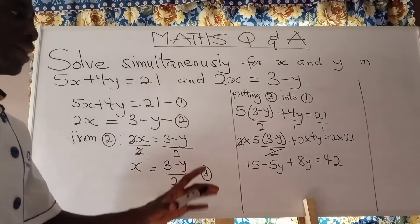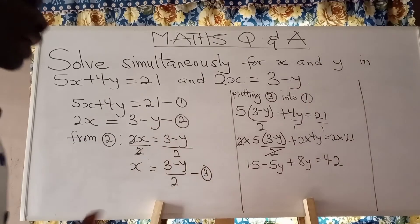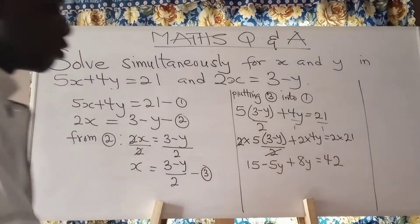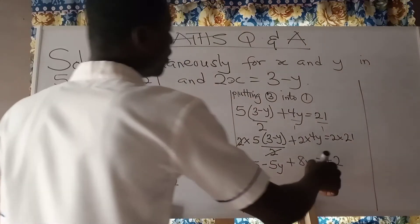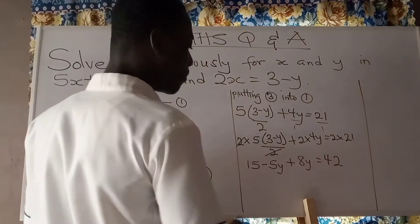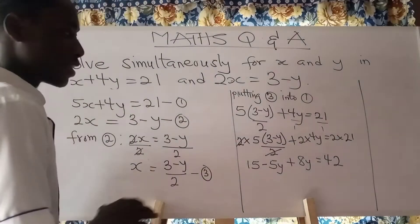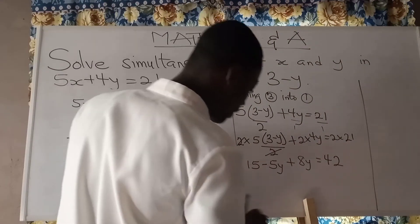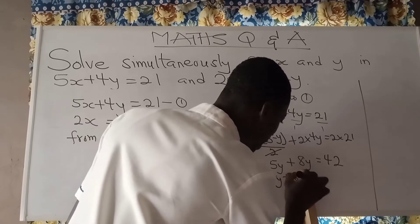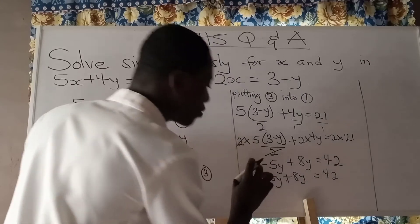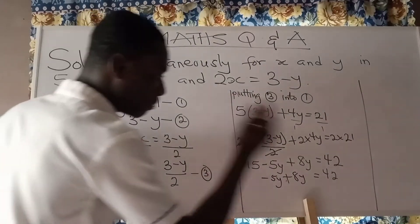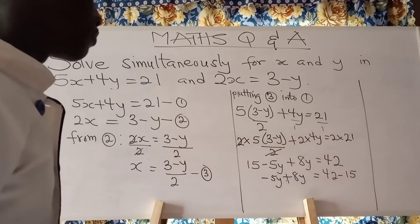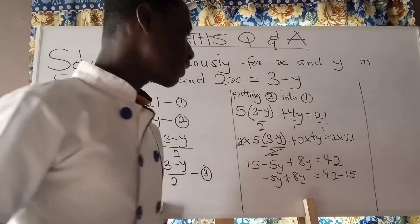Now that we are done expanding, we group like terms — writing those with y on one side and the constants on the other. So we bring minus 5y and 8y to one side, and send 15 to the other side. Since 15 is positive here, it becomes negative when moved. So we have minus 5y plus 8y on the left.